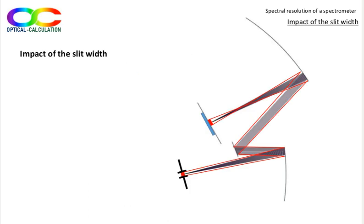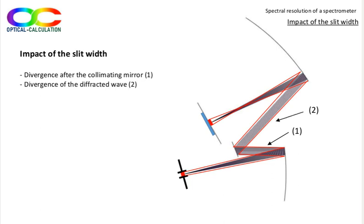Because the slit has a non-zero width, its image on the detector has a non-zero width also. That finally induces a spread of the spectral lines on the matrix of pixels. For calculating the theoretical width of the slit image on the detector, we must first calculate the divergence of the beam induced by the slit width after the collimating mirror, then calculate the divergence of this beam after diffraction by the grating, and finally calculate the beam width on the detector matrix.